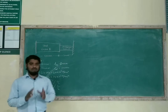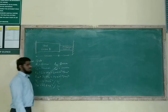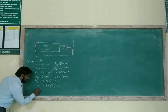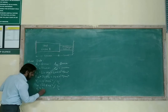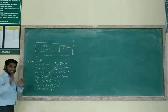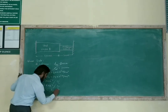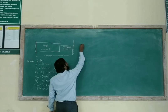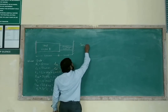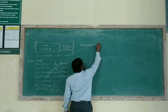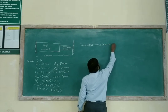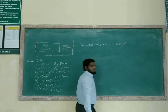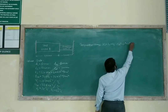The initial temperature T₁ is 38 degrees centigrade and the final temperature T₂ is 21 degrees centigrade. The temperature change T = T₁ − T₂ = 38 − 21 = 17 degrees centigrade, which is a decrease in temperature.